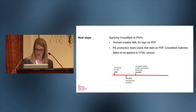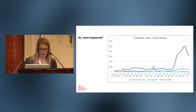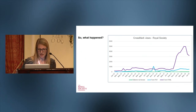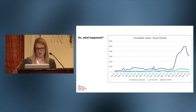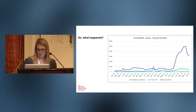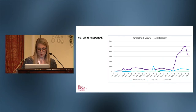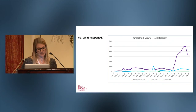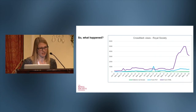This graph shows the number of clicks on Crossmark logos, starting in January 2012 and going up to July this year. Over that time, our deposits remained pretty steady — we were depositing between 150 and 200 articles' Crossmark metadata per month. What's quite interesting is that the graph for all publishers over the same time period looks really, really different, and I haven't included it here, but I can show you that data — it's freely available on the Crossmark app online.